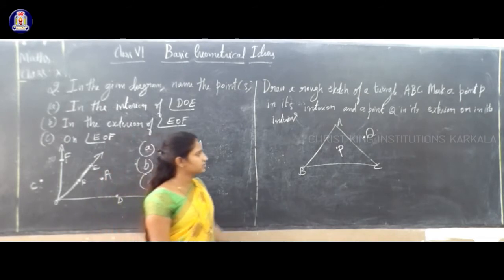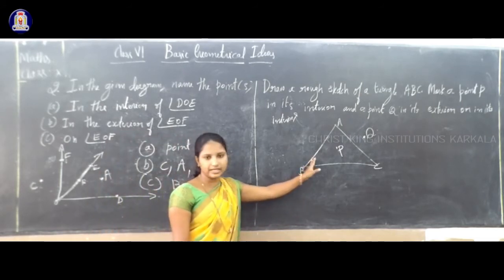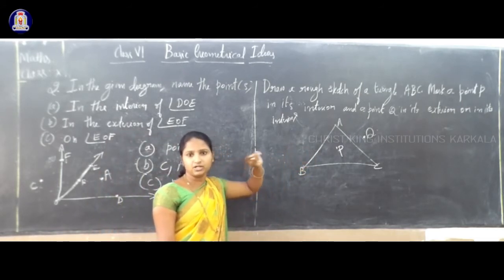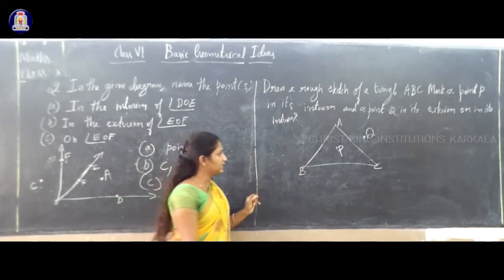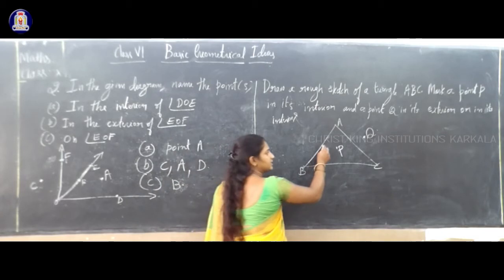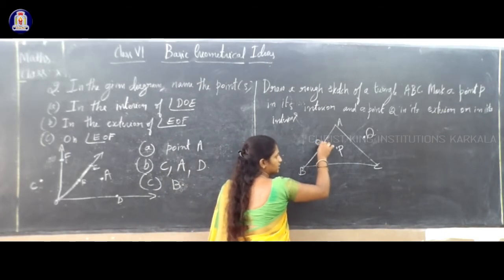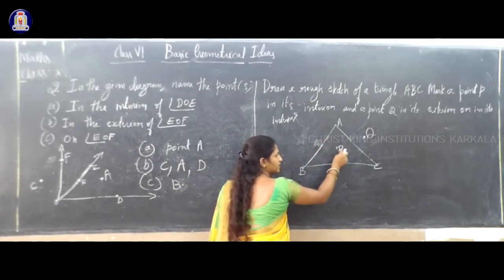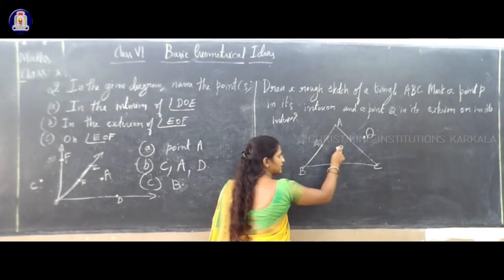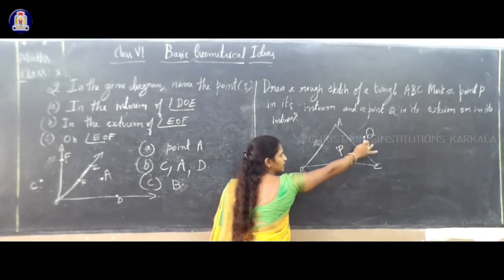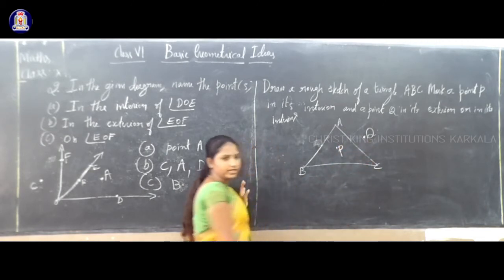If they ask to represent a triangle, just write the point Q on the triangle. Here they ask to write inside — interior is inside, exterior is outside. Clear.